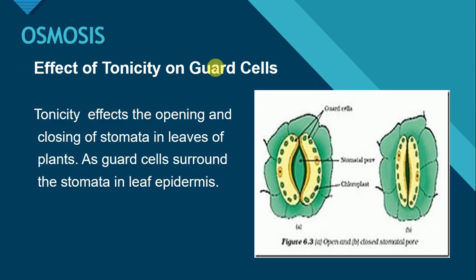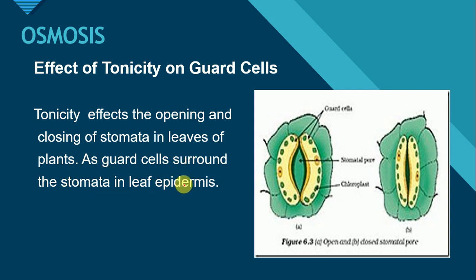Let us see the effect of tonicity on guard cells. Guard cells wo cells hootay hai joh stomata ko surround karte hai. Tonicity affects the opening and closing of stomata in leaves of plants, as guard cells surround the stomata in leaf epidermis. Tonicity plant cells mein stomata ki opening aur closing ko effect kerti hai.